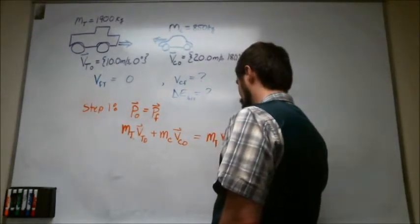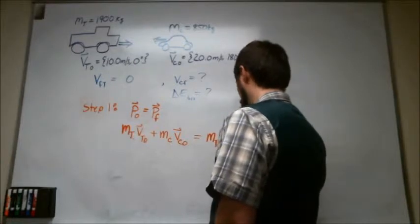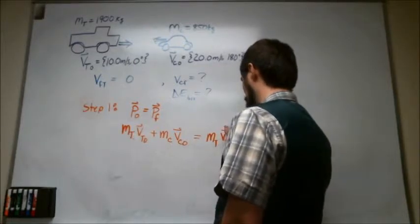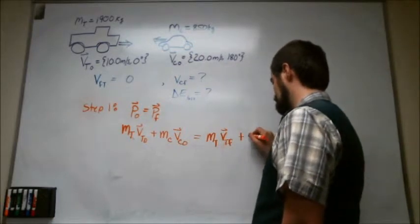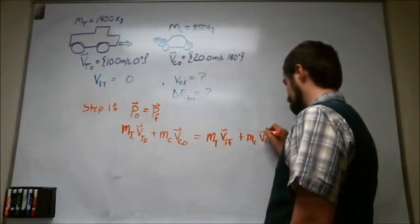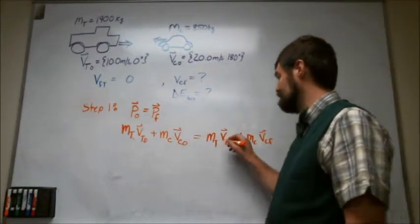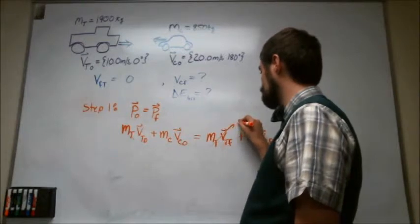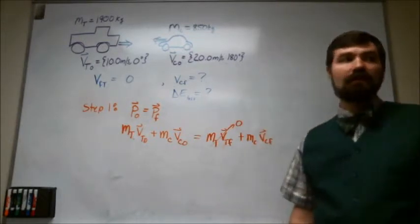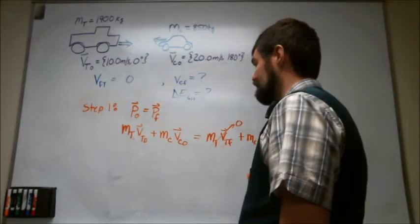And that has to be equal to the truck's mass times its final velocity, so m truck v truck final, plus mass of the car times the car's final velocity. And we were given that the truck comes to a stop at the end, so this term is zero. So really this has to be equal to this.